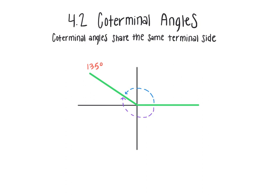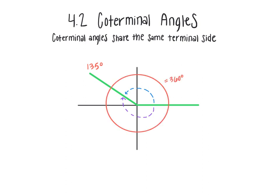In standard form, opening up from the x-axis in the counterclockwise direction, I have an angle that's 135 degrees. But I should also realize that I could open up from the x-axis in the clockwise direction, which would give me a negative angle of a different degree measurement. This angle going clockwise and this angle going counterclockwise both give me a complete circle, so when you add them together they should equal 360 degrees. To figure out what this angle is, I can simply subtract 135 from 360 degrees.